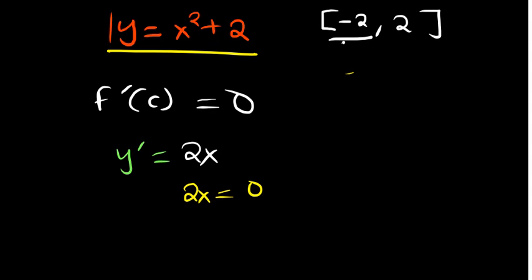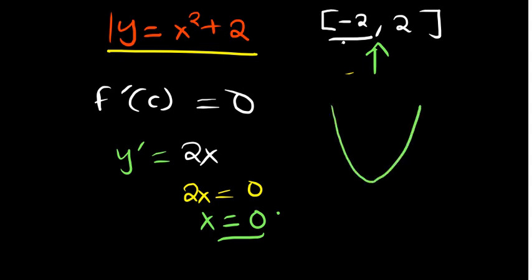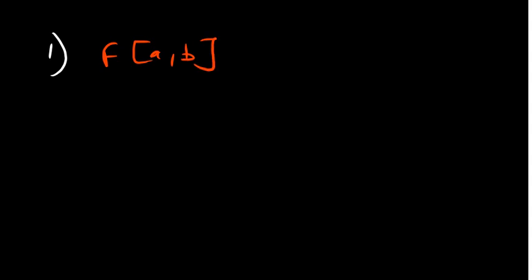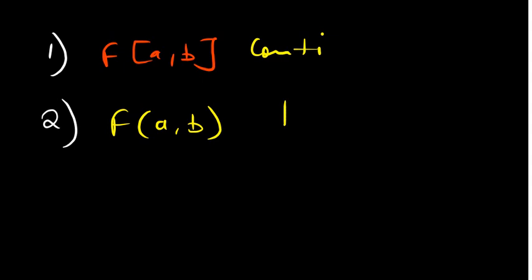Setting 2x = 0, we find c = 0. Zero is between -2 and 2, which confirms there is a point where the derivative equals zero. To summarize Rolle's Theorem: first, the function must be continuous on the closed interval [a, b]; second, the function must be differentiable on the open interval (a, b); and third, f(a) must equal f(b).